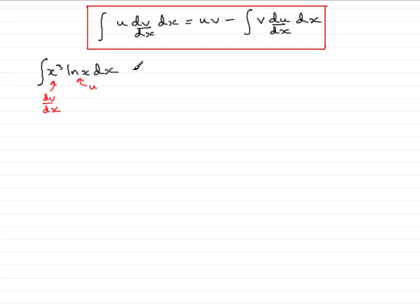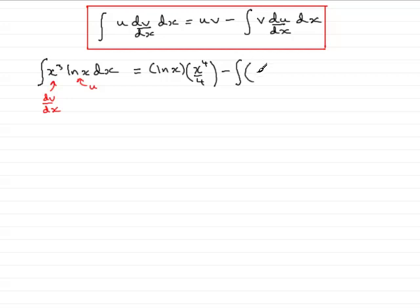Using the formula, we have u, which is the natural log of x, multiplied by v, which is the integral of the other part. The integral of x cubed with respect to x is x to the power 4 over 4. Then we have minus the integral of v — that's x to the 4 over 4 — multiplied by du/dx, which is the differential of the natural log of x, so that's 1 over x, integrated with respect to x.